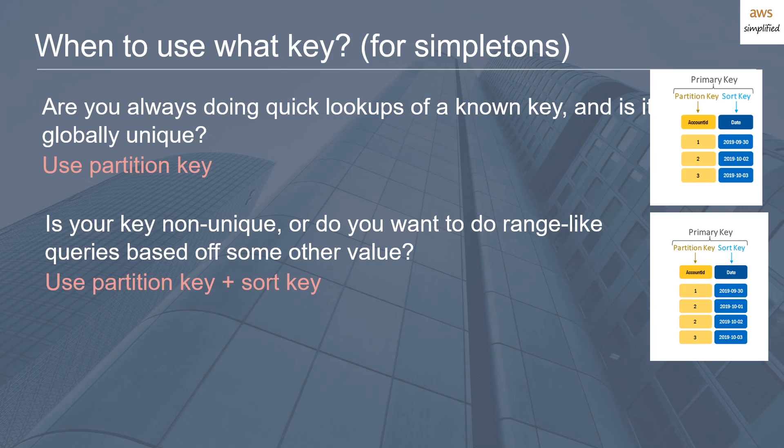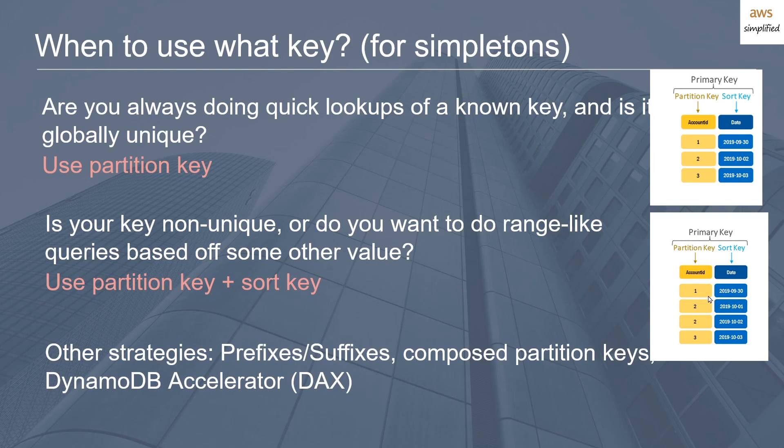However, if you have a very high throughput application, something you can foresee to have in the thousands of read or write capacity units, you may need to do some other homework. And that involves making sure that these values in some way are distributed across different partitions. There's a couple methods to do this or a couple strategies: you can add known prefixes or suffixes to your partition keys. So that when it comes time to look up, you may need to look up this value that's appended with a prefix or suffix. And what that'll do is ensure that all the value twos are distributed over different partitions for optimal lookup performance. Another strategy is to use composed partition keys. So use account ID plus some other value plus some other value and make that unique thing be your partition key. And again, that'll ensure that it's distributed over different partitions.